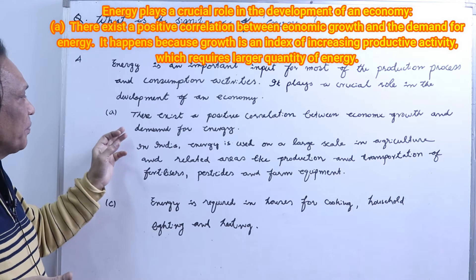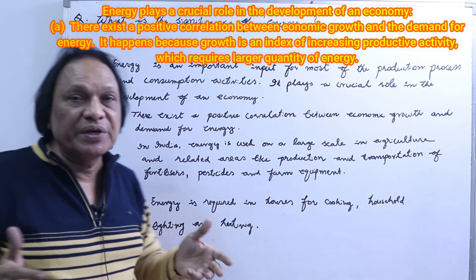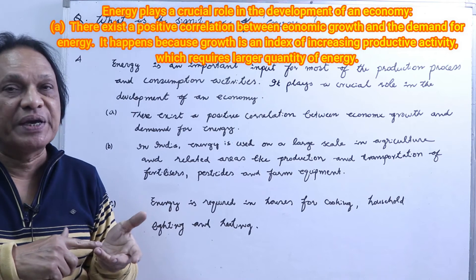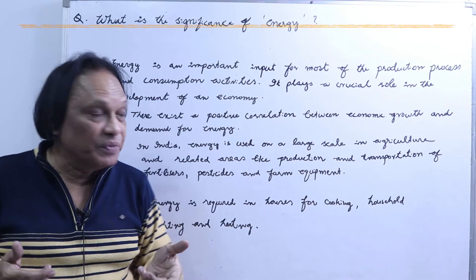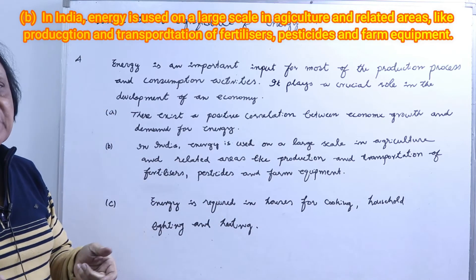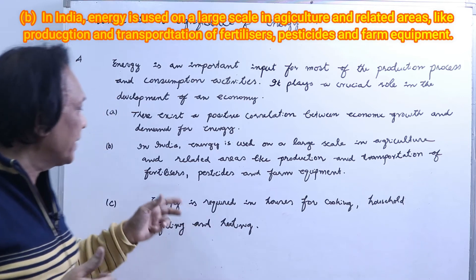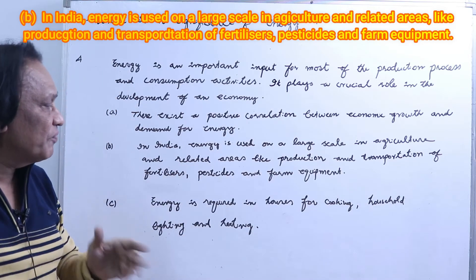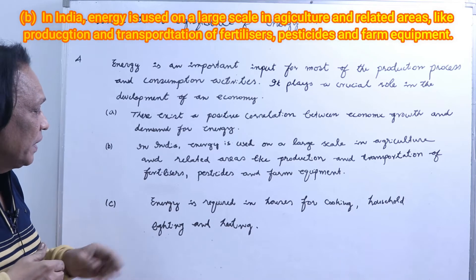We can divide the significance of energy into three points. First, there exists a positive correlation between economic growth and demand for energy — the more the economy develops, the more demand for energy. Second, in India, energy is used on a large scale in agriculture and related areas such as production in the factories, transportation of fertilizers from factories to farmers, pesticides, and farm equipment. Without energy we won't be able to transport them.